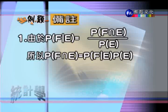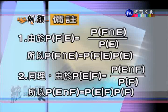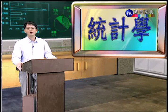由條件機率的定義可以推導出：P(E∩F) = P(E) × P(F|E)，同理也可以寫成 P(E∩F) = P(F) × P(E|F)。這些條件機率的性質，都是同學應該要熟悉的。